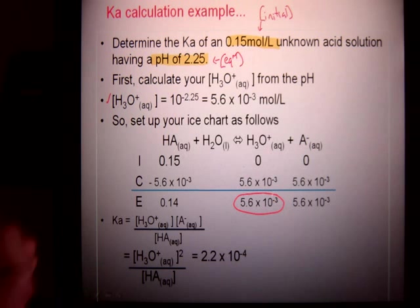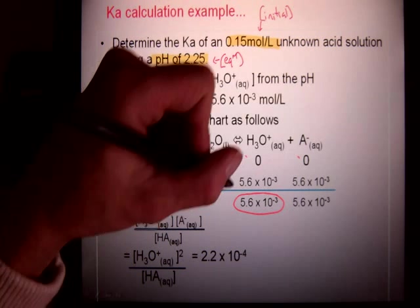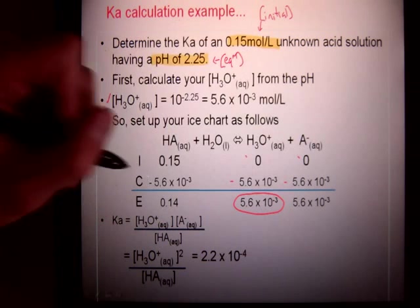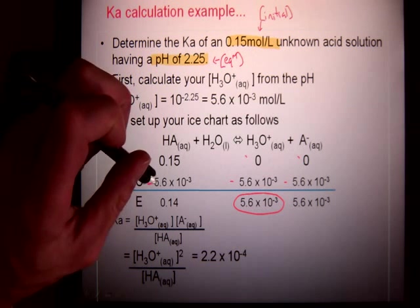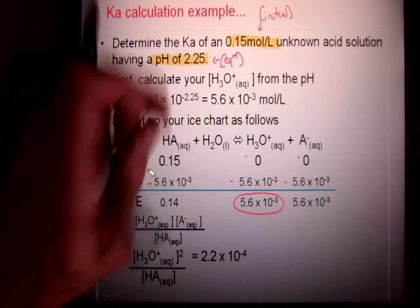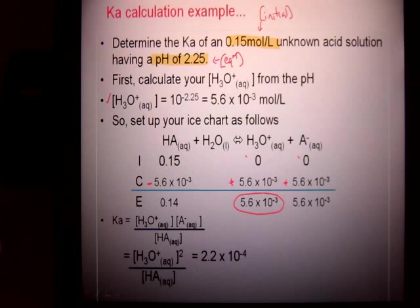Now I see that I started with 0 as we did before. Now I have my change value. It's always 1 to 1 to 1 so that makes it kind of simple. My reactants go down so I have a minus value here. My products go up so they're positive and then I can plug in my values and that's it.